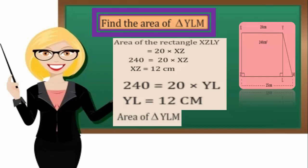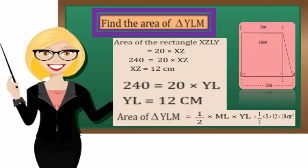Then, the area of the triangle YLM equals half times ML times YL equals half times 5 times 12 equals 30 centimeters squared.